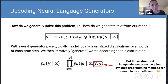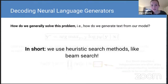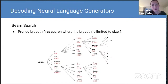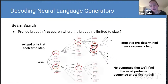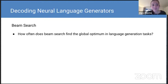We can extend our dynamic programming methods from the statistical machine translation days, but these may not even terminate. So we turn instead to heuristic methods like beam search. In a nutshell, beam search is a pruned version of breadth-first search where the breadth is limited to some size k — we extend only k sequences at each time step, stopping at a predetermined maximum sequence length. Since this is a heuristic method, there's no guarantee we'll actually find the most probable sequence under the model.